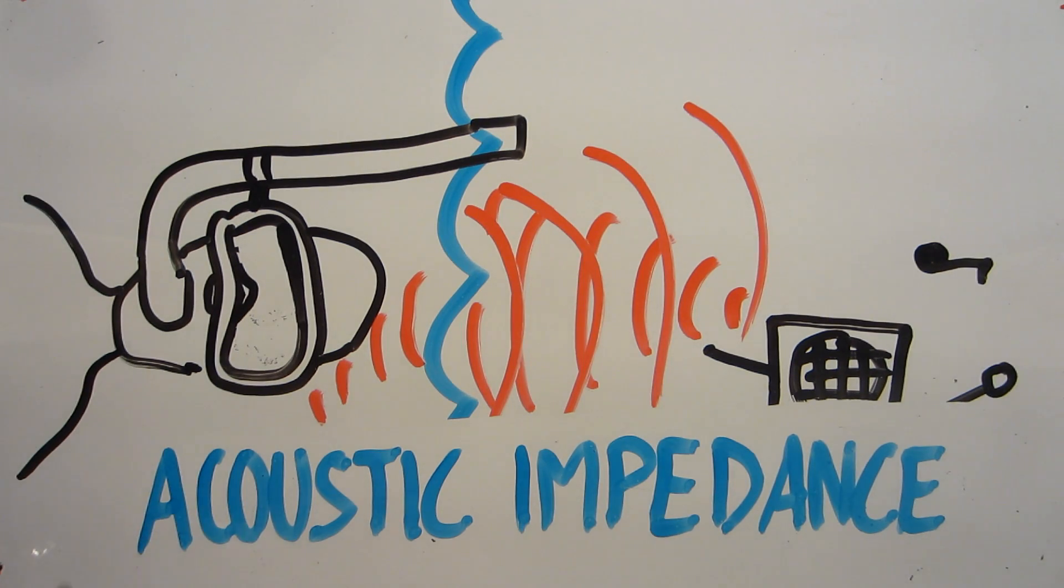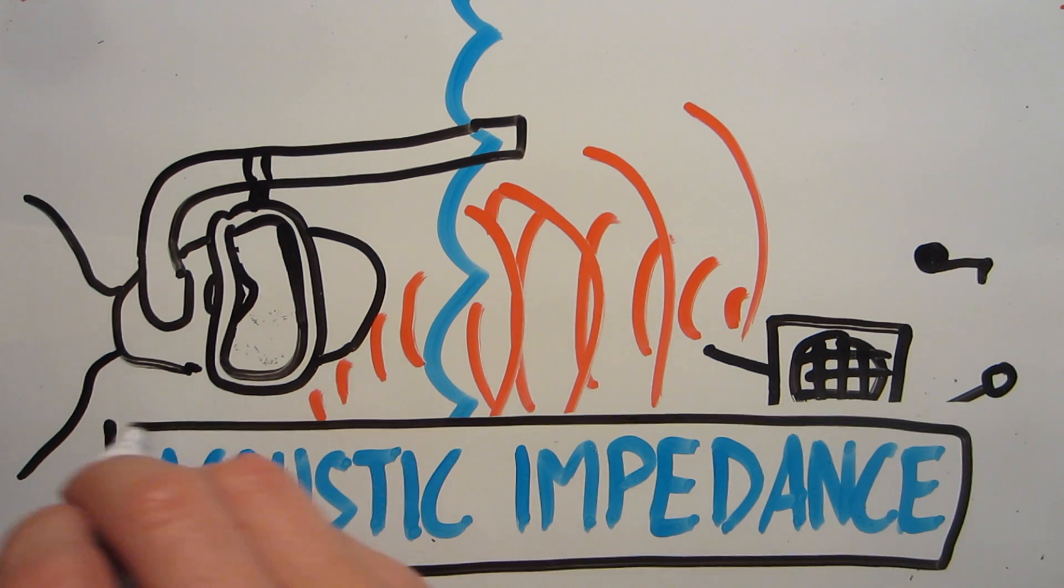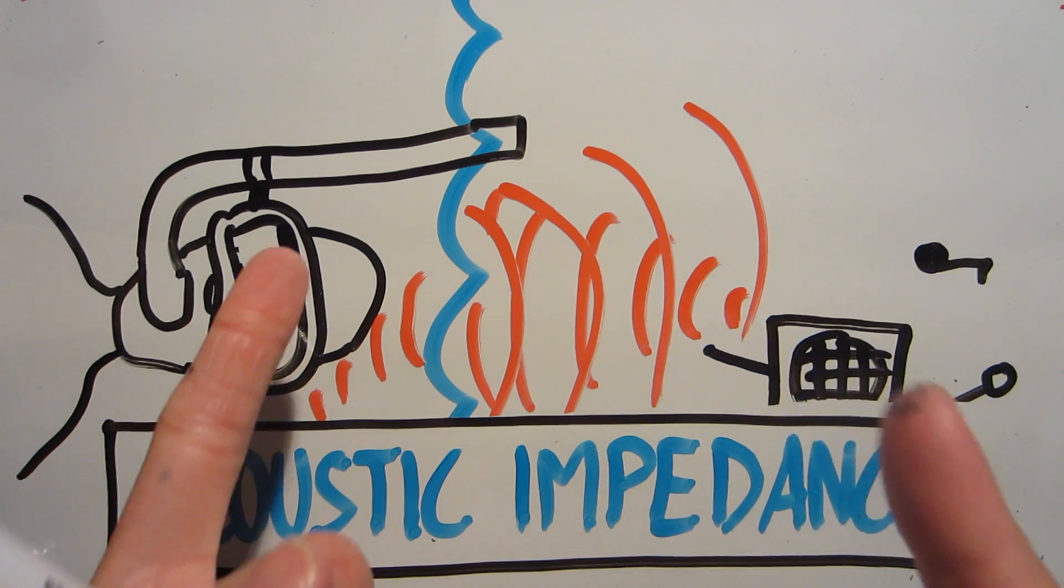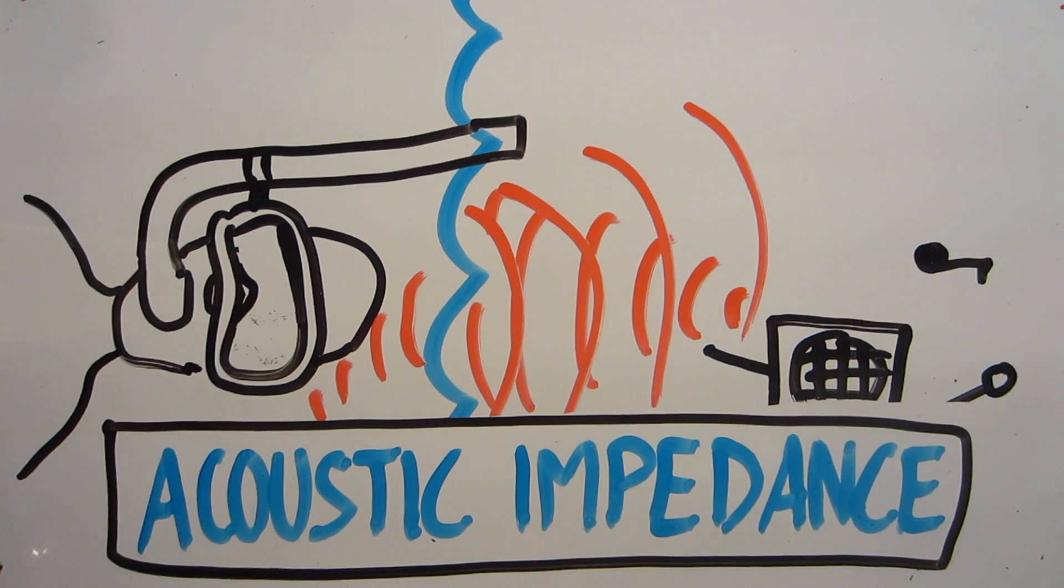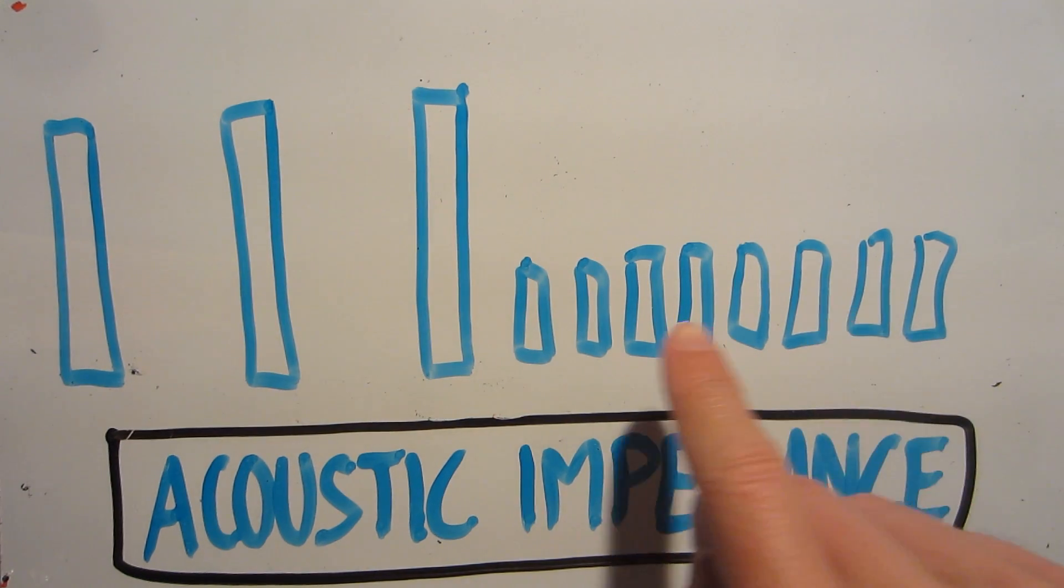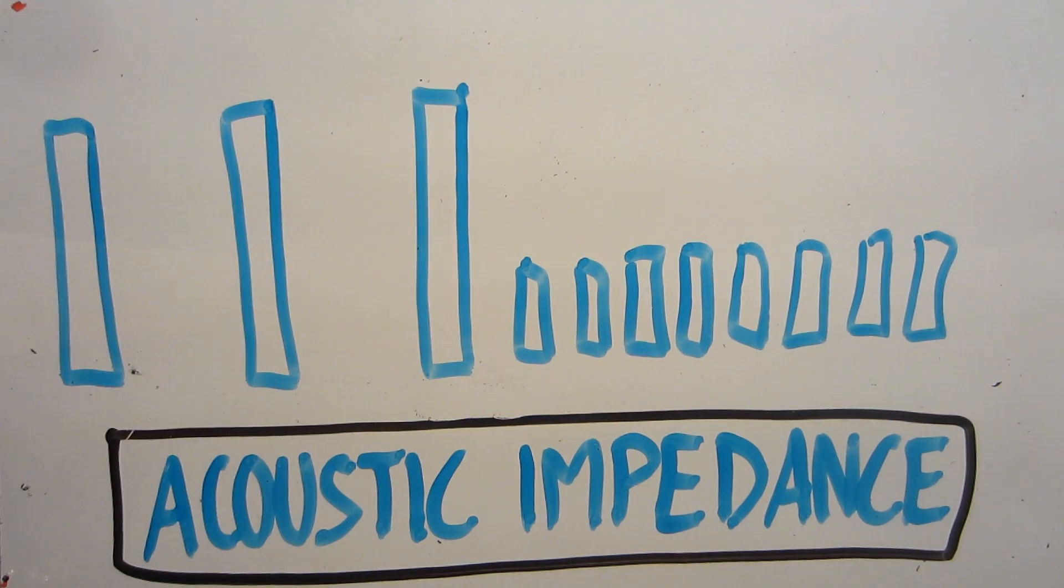The pressure needed to vibrate a material is known as its acoustic impedance, and the problem we're dealing with here is known as an impedance mismatch. You can imagine something like a line of little dominoes running up against bigger ones. The signal is lost.